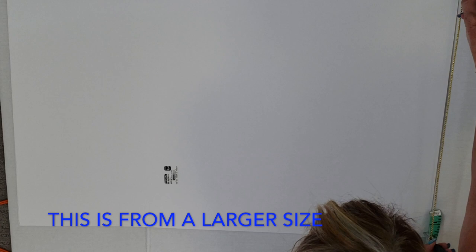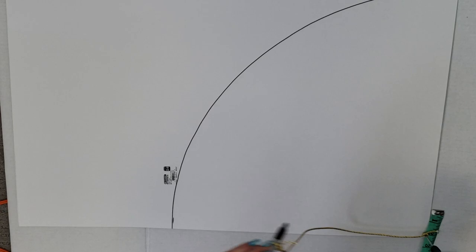To make my cone shape I used poster board and then I just tied a piece of string onto a sharpie and I poked the other end into the corner and then I just drew my arc.